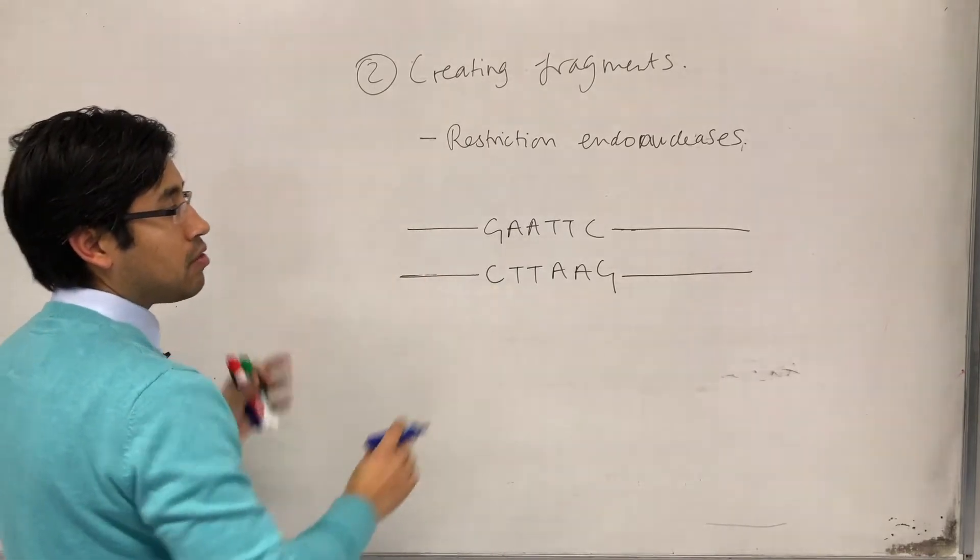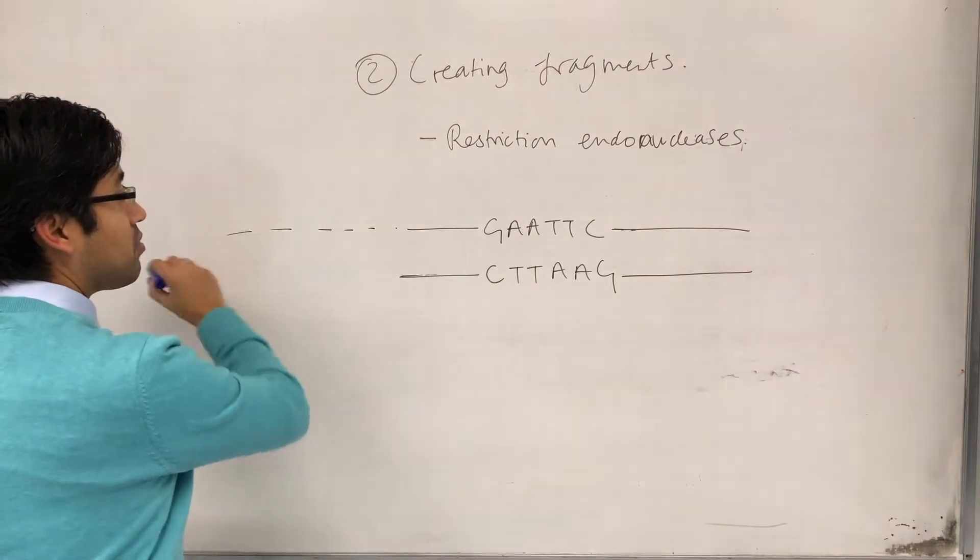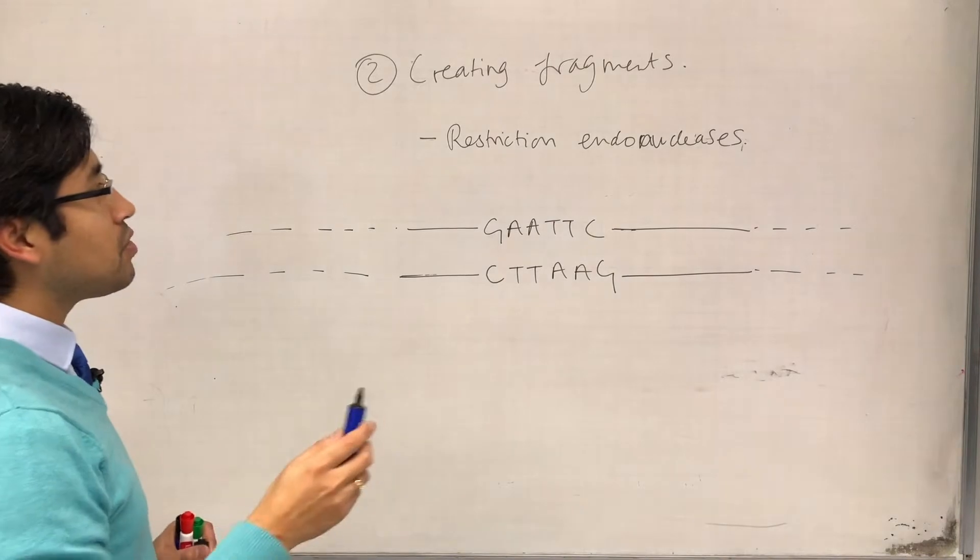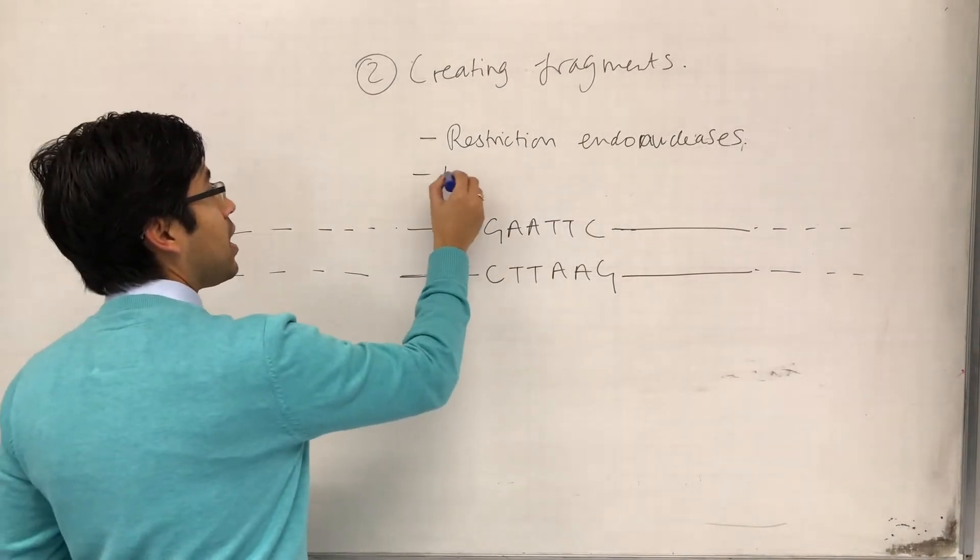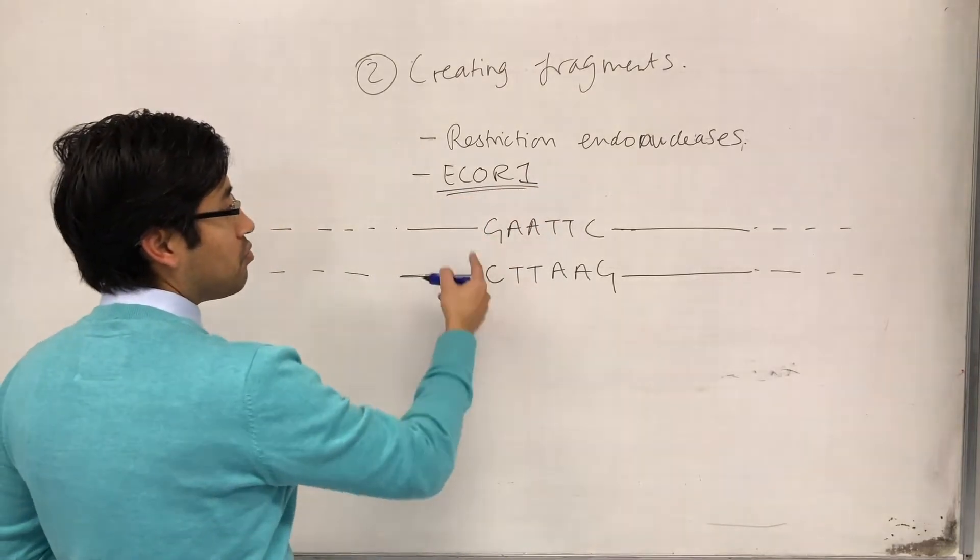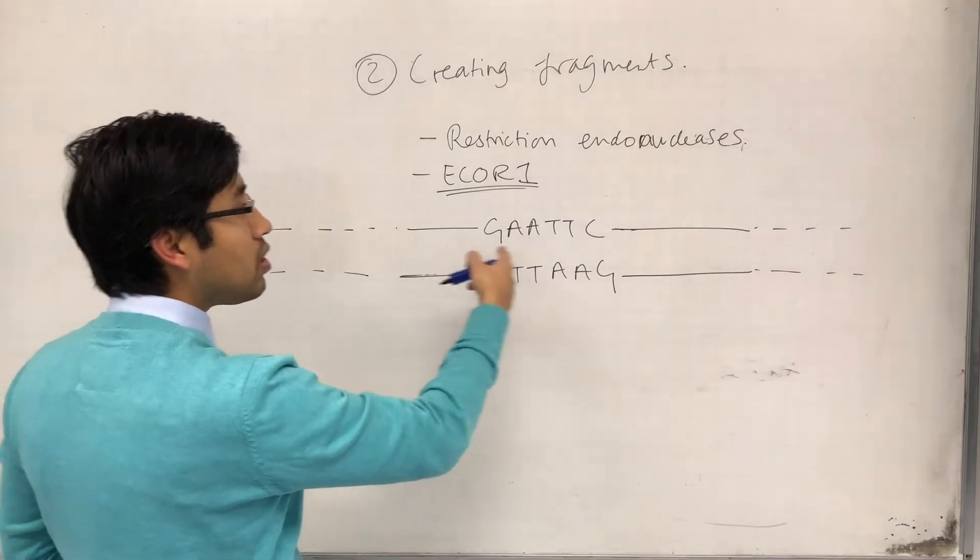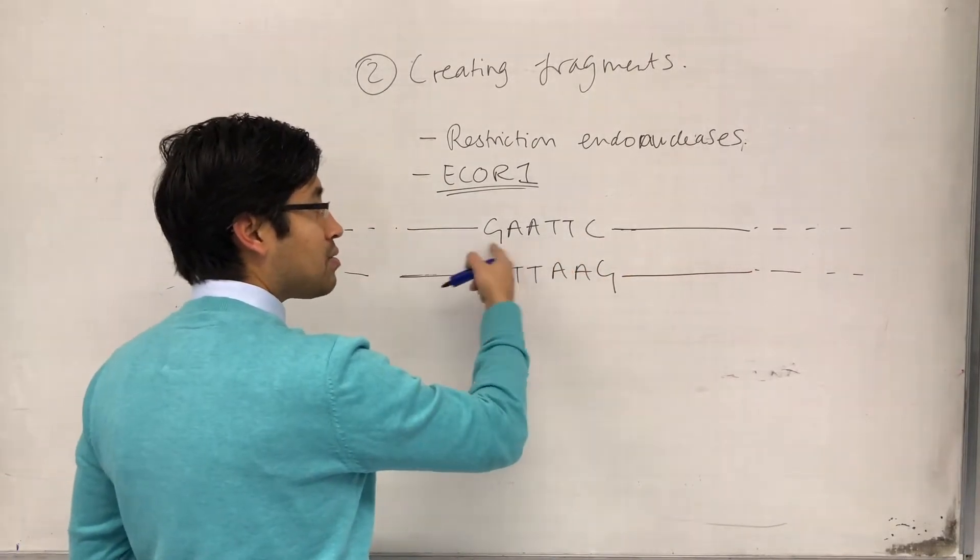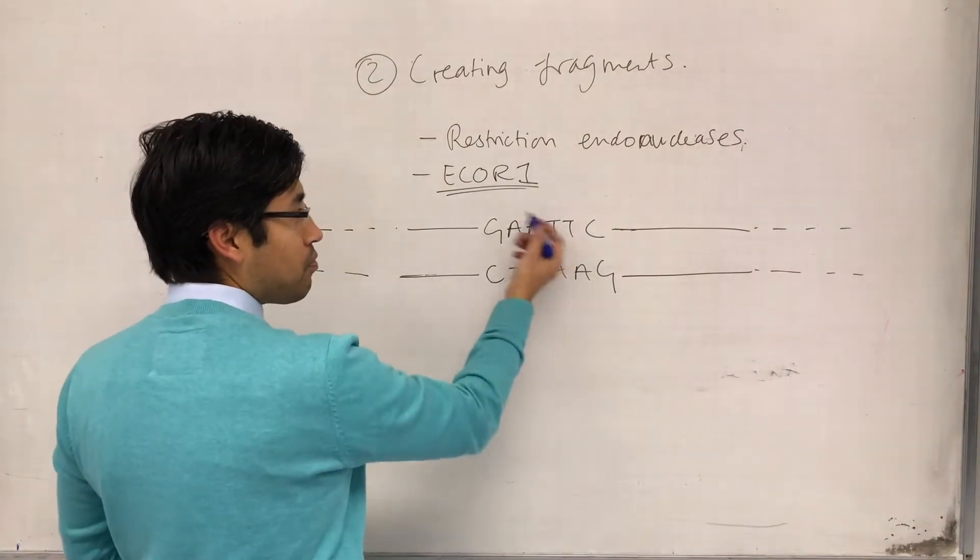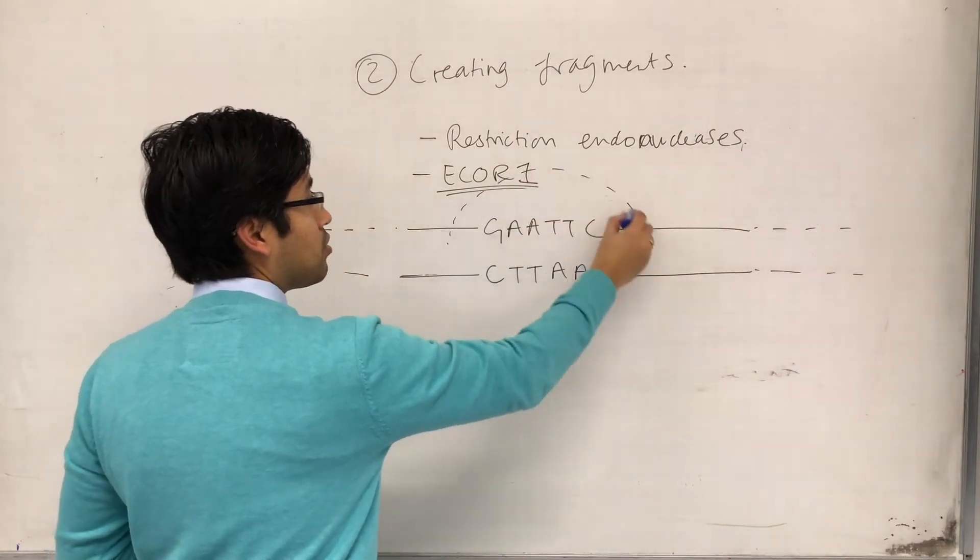We're just looking at a particular site in a long DNA molecule. Obviously, it stretches off that way, stretches off that way. But the enzyme, the restriction endonuclease, ECOR1, that enzyme, when it recognizes this sequence, so it might just be moving along this DNA molecule, but when it binds, when it sees or feels this sequence of bases on the DNA strand, it will bind to it.